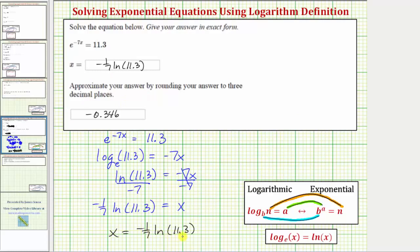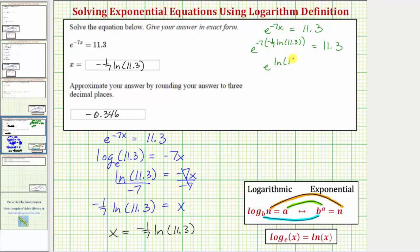Let's verify our solution is correct by substituting this value into the equation and making sure it satisfies the equation. Beginning with e raised to the power of negative seven x equals eleven point three, we perform the substitution for x. We would have e raised to the power of negative seven times negative one seventh natural log eleven point three equals eleven point three. Looking at the exponent, notice how negative seven times negative one seventh equals one.